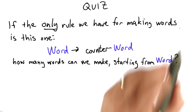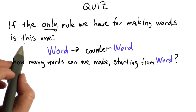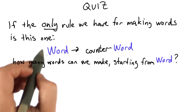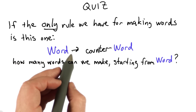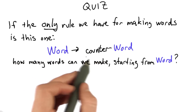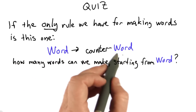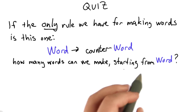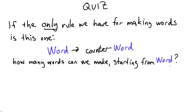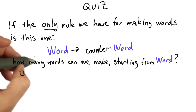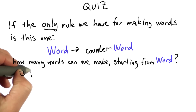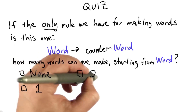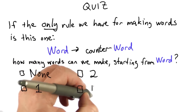So the question is, if the only rule that we have for making words is this one — the one I showed you before — where we have the non-terminal 'word', and that can be replaced by 'counter' followed by another 'word', then the question is how many words can we make starting from the non-terminal 'word'? And the possible answers are: none, one, two, or infinitely many.